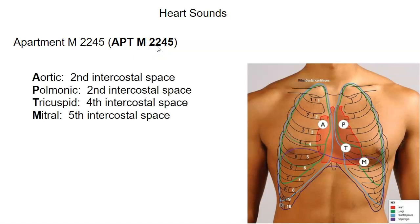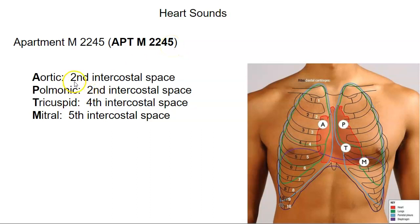2245 refers to the intercostal spaces. If we count the ribs, one, two — this is the second intercostal space. So the positions are two, two, four, and five. At the second intercostal space, we can listen for the aortic valve. At the second intercostal space on the other side, we can listen for the pulmonic valve. At the fourth intercostal space on the left side, we can listen for the closing of the tricuspid valve. And at the fifth intercostal space, around the clavicular midline or under the nipple, we can listen to the mitral valve close.